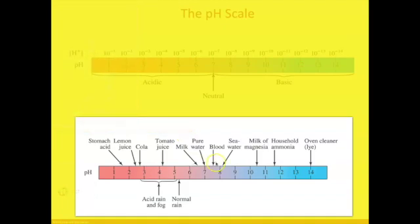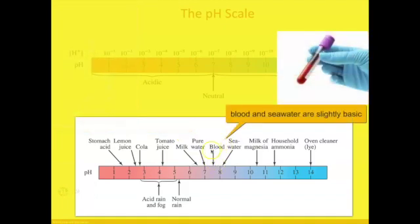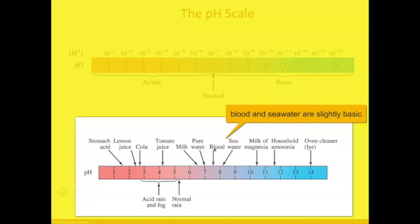Blood, which is mostly water as well, this is just on the other side of 7, so blood is slightly basic. This is because blood actually has some buffers in it that are additional ions dissolved in blood that allow us to absorb any acid that's produced in our body, so we want it to be on the slightly basic side.